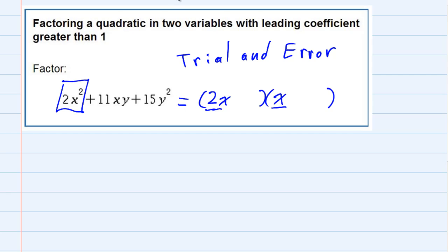However, for the last term, the 15y squared, that's what we're going to use to find the last term. But we do have a couple of choices because the 15y squared we can use either a 1y and a 15y, kind of like we did with the 2x and x, or we could use a 3y and a 5y.